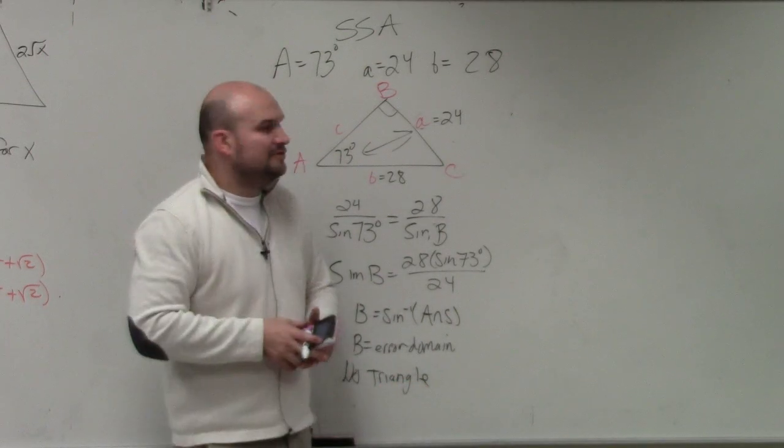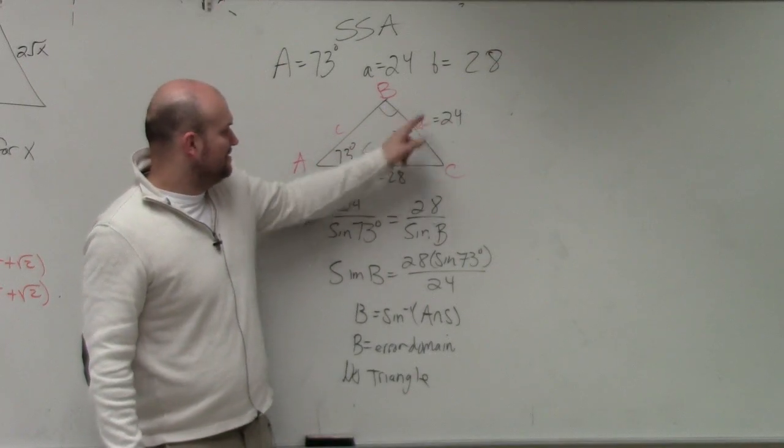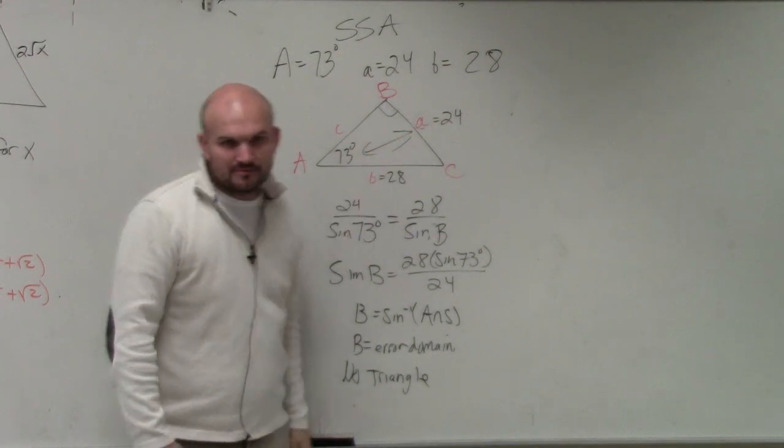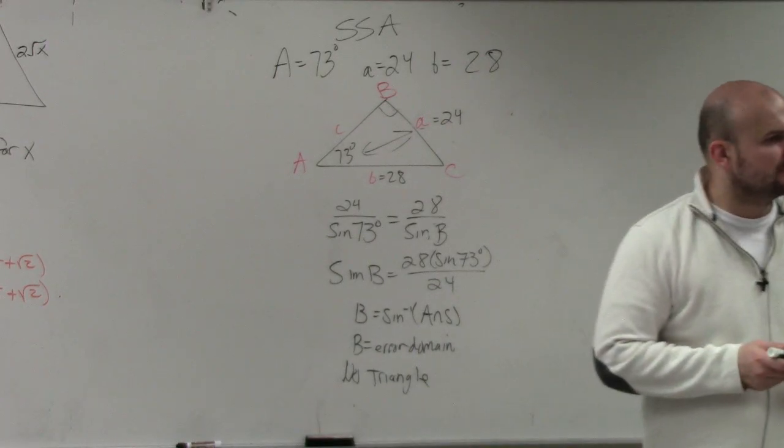So therefore, this is an example of no triangle exists. There is no possible way for you to create a triangle when you have one side length at 73 degrees, the other one's 24, and that's 28. So you can't create a triangle with those lengths. That triangle actually doesn't exist.